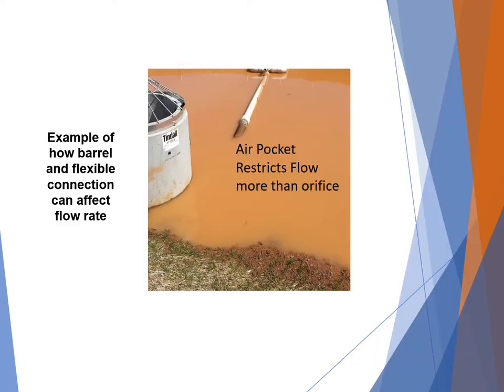One example of how design affects flow: several skimmers use a flexible coupling that can be several feet long. When the pond is shallow, that coupling can float and create an air pocket that may restrict flow more than even the orifice. This is just one example of many factors that impact skimmer flow.